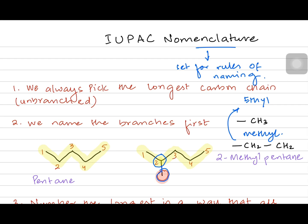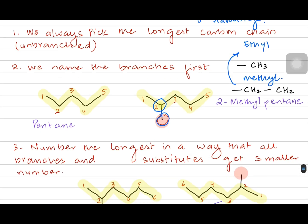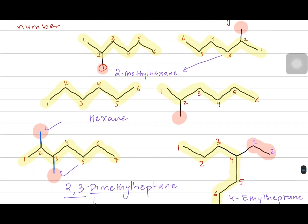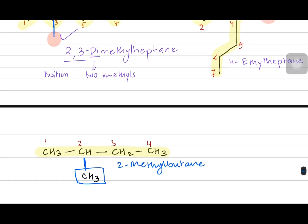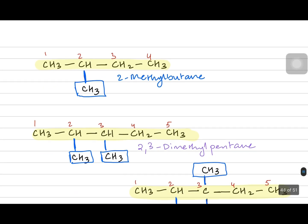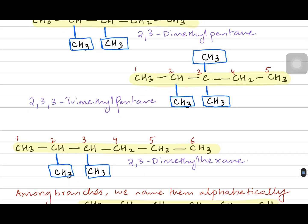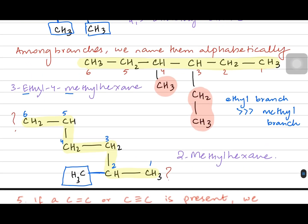The first rule was to identify the longest carbon chain, which is unbranched. You number them in a way that the substituents or branches get smaller numbers — like methyl was a branch, ethyl was a branch. Then we did some examples with the skeletal and displayed formula, and we saw how these branches could be double, so we used the prefix 'di' before them, or 'tri' if the branches were three in number. We did some examples with dimethyl, trimethyl, and diethyl.